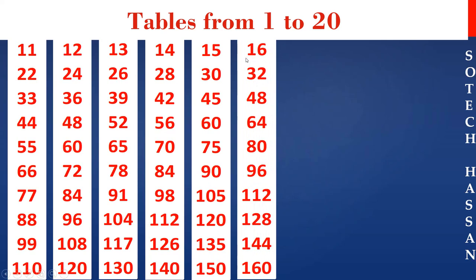16th table: 16 1s are 16, 16 3s are 48, 16 4s are 64, 16 5s are 80, 16 6s are 96, 16 7s are 112, 16 8s are 128.